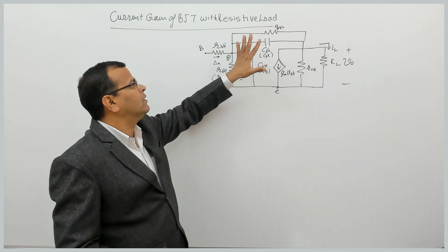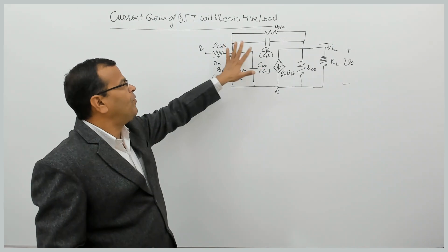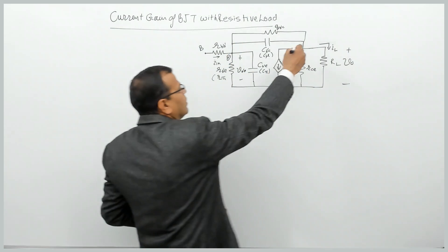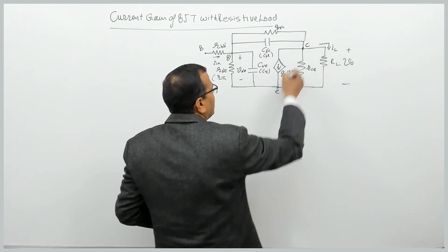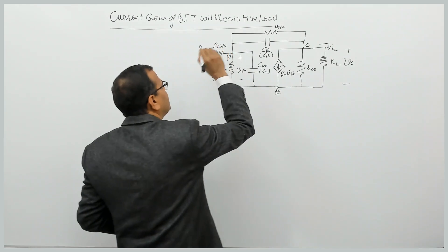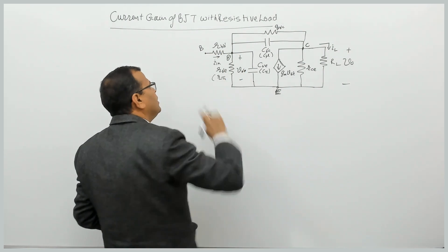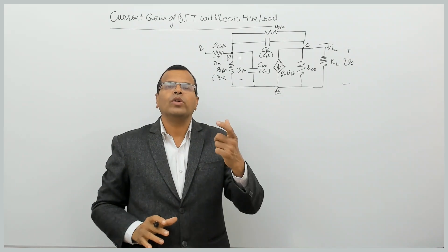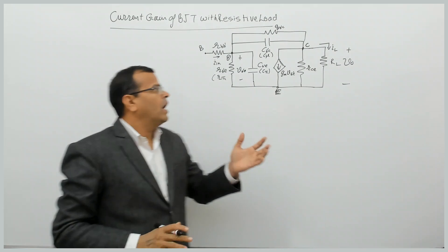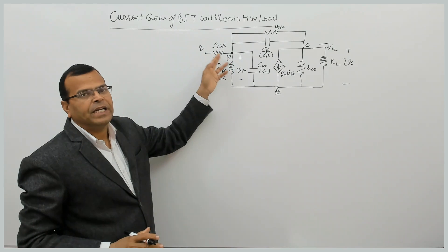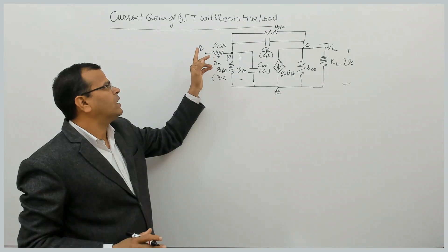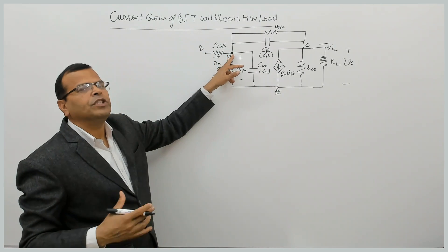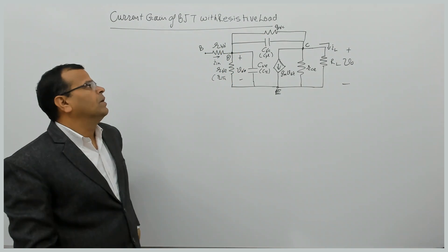This is the high frequency equivalent circuit of a BJT. This is the collector terminal, this is the emitter terminal, this is the base terminal, and B-dash is an internal node which is not accessible. RBB-dash is called the base spreading resistance — the resistance between the external terminal of the device and a fictitious point inside the base layer.